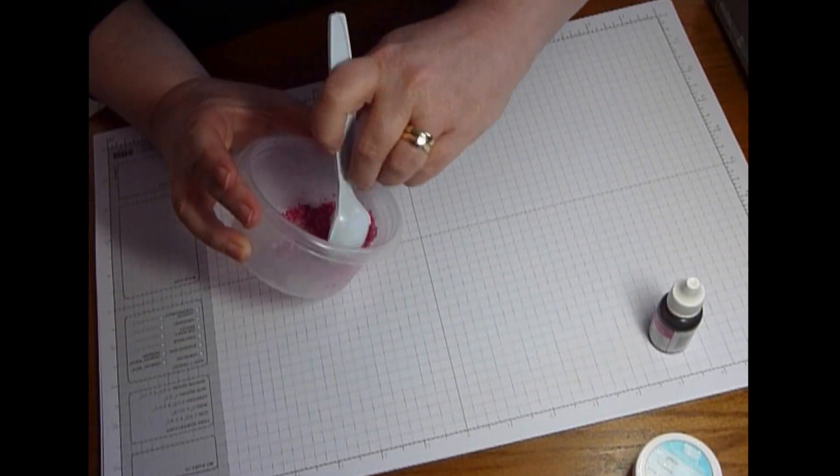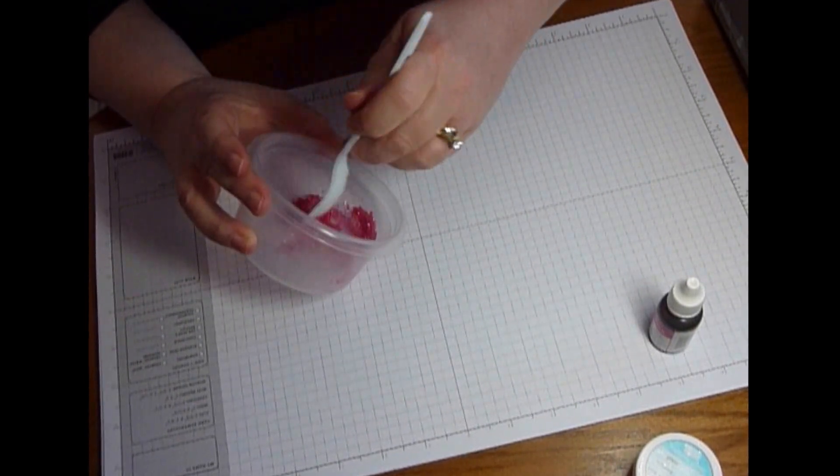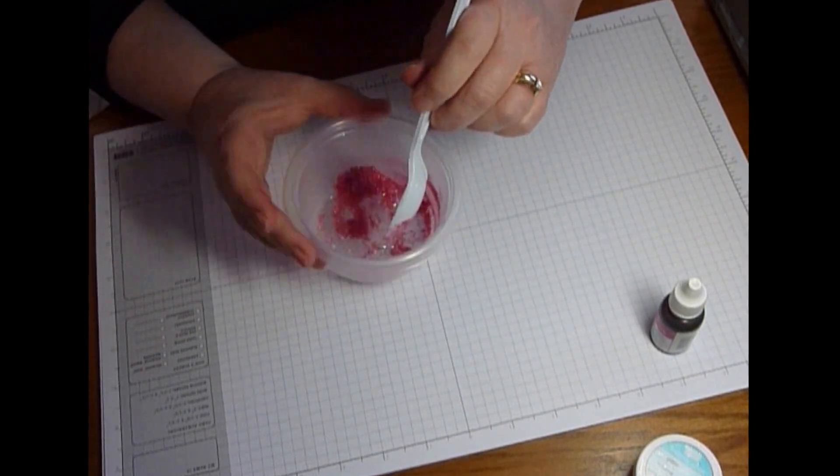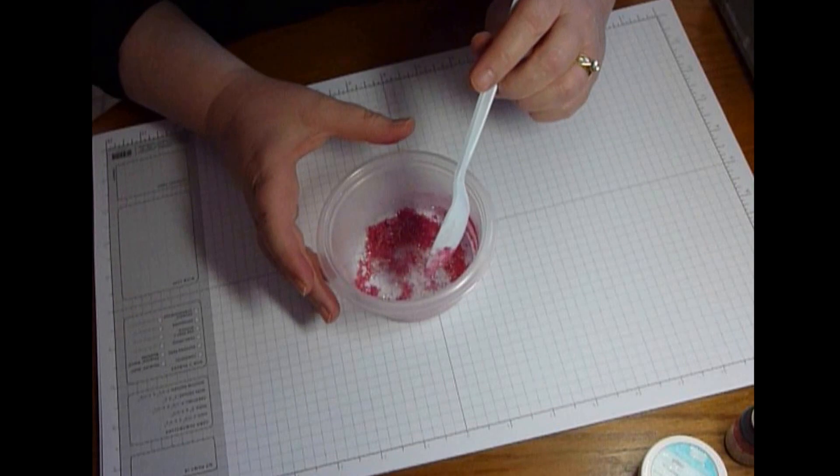If you want it a little darker, add a little bit more ink. If you want it a little bit lighter, add a little bit more glitter. You can see that once I've got that all worked in, my glitter has picked up the color of the reinker.